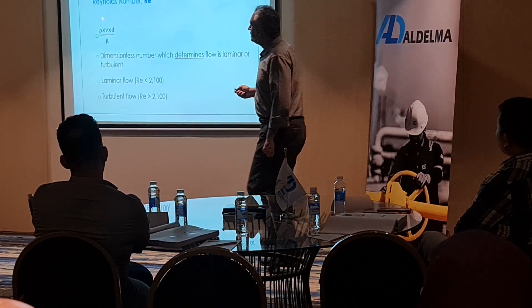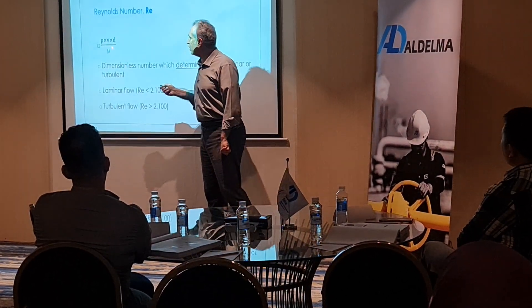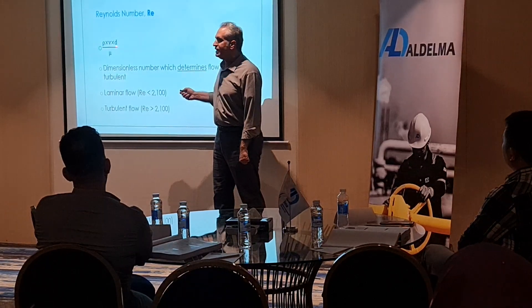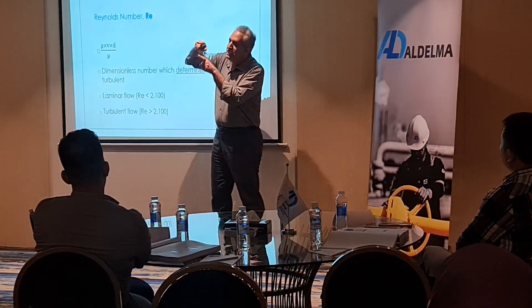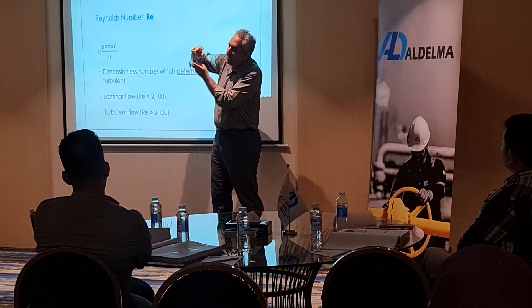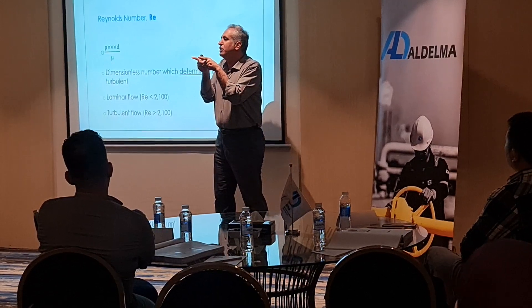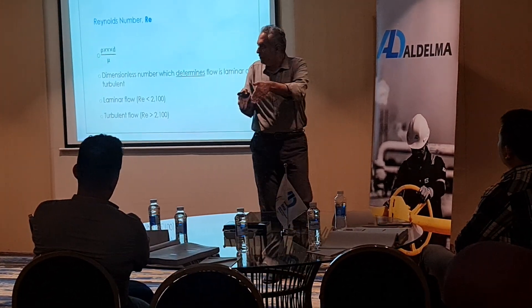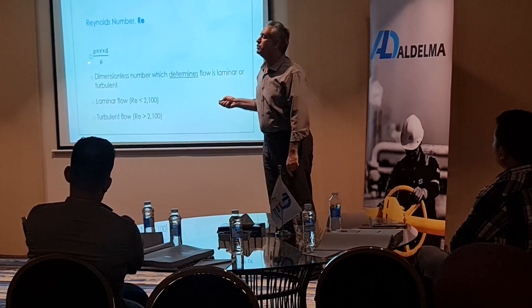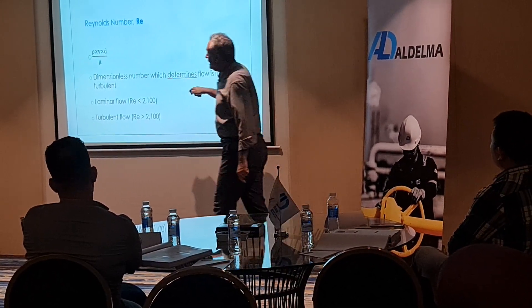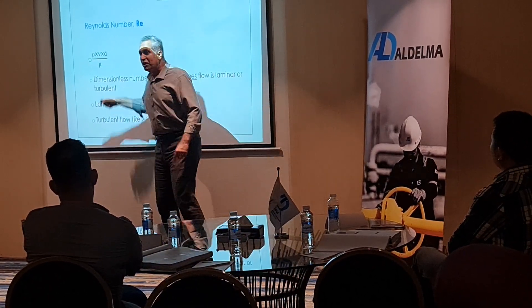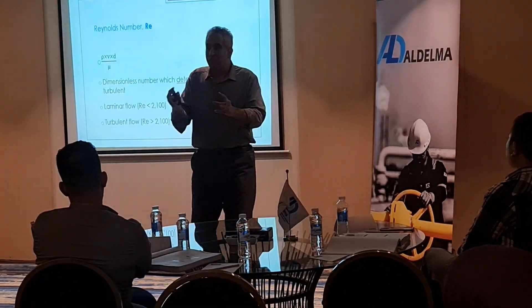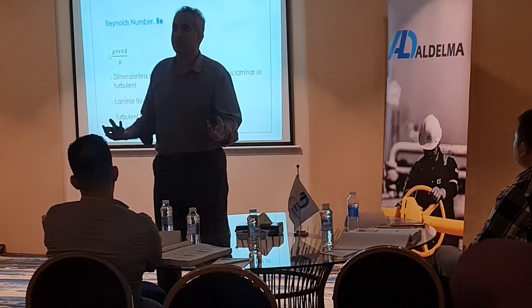The Reynolds number is rho times V times d, divided by mu. Rho is density, V is velocity, D is the distance or clearance between the drill pipe body and the borehole. And mu is the viscosity. The Reynolds number tells us whether the flow is laminar or turbulent.